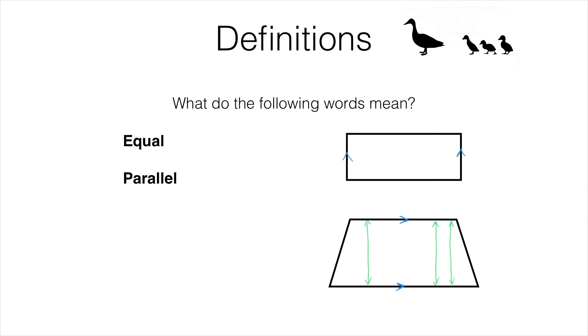Notice in this particular case these edges of the rectangle are parallel and they are also equal. But this symbol here only tells you that they are parallel. In the trapezium we had these two parallel edges but they were not equal. They were not the same length. So be really careful. You can have parallel edges that are not the same length.